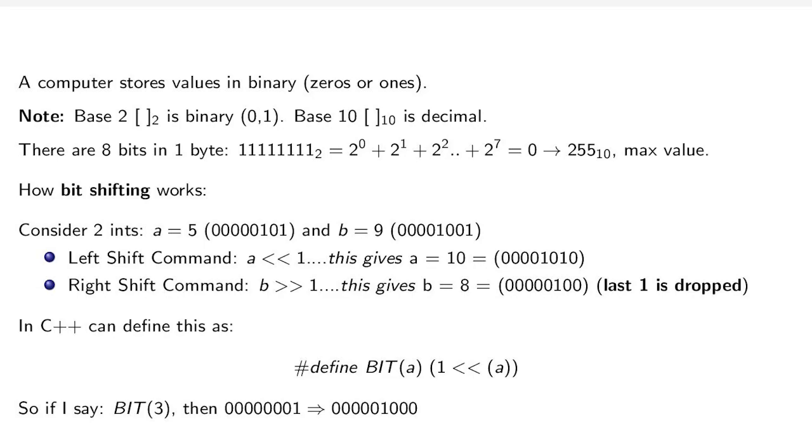You can define this in C++ as #define BIT(a) (1 << (a)). So if I say BIT(3), then 00000001 becomes 00001000, which left shifts by 3. If I say BIT(4), it'll left shift by 4.